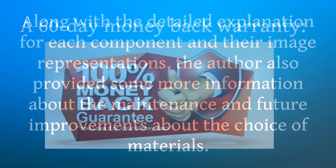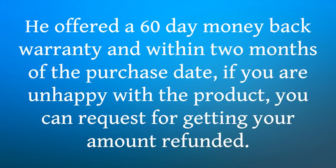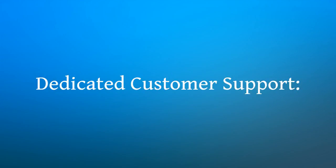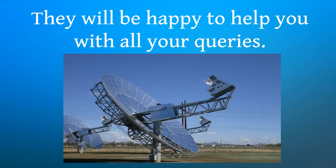A 60-Day Money-Back Warranty: the author is so confident about the results that the Solar Sterling Plant PDF book is going to give that he offered a 60-day money-back warranty. Within two months of the purchase date, if you are unhappy with the product, you can request a refund. Dedicated Customer Support: throughout your journey with this book, if you have any doubts or get stuck somewhere, you can always contact the customer support for detailed clarification. They will be happy to help you with all your queries.